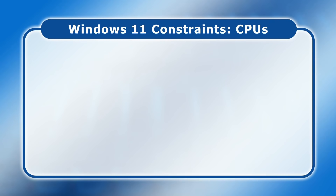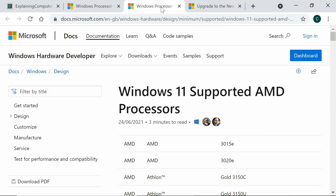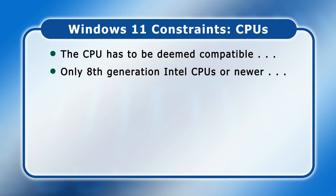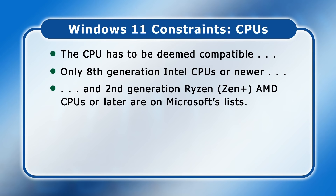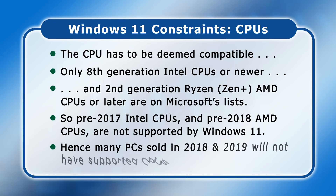Microsoft have thrown two additional hardware hurdles into the mix. First, Windows 11 will not run on just any 1 GHz dual-core 64-bit CPU, but only on one that Microsoft deems compatible. Full lists of compatible Intel and AMD processors have been published. The headline is that Windows 11 will only support 8th generation Intel processors or newer, and 2nd generation Ryzen Zen Plus AMD chips or later. In practice, any PC with a CPU released before about 2017 for Intel or 2018 for AMD will not support Windows 11, meaning a great many PCs sold in 2018 and 2019 contain a processor that cannot run the latest Windows. This is, at best, an absolute disgrace.